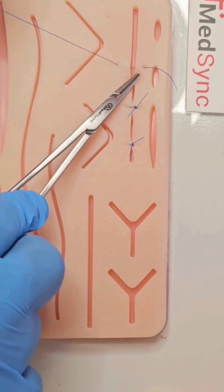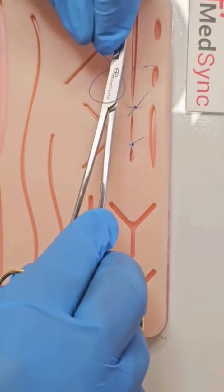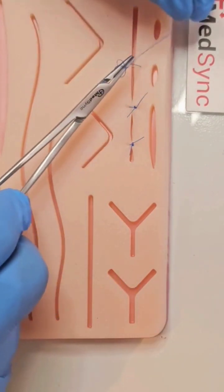You perform two revolutions around the needle holder. This is a surgeon's knot. Pull the suture through.